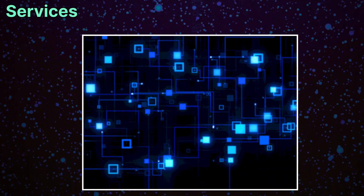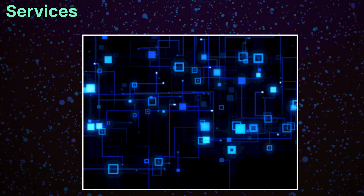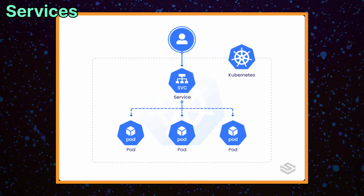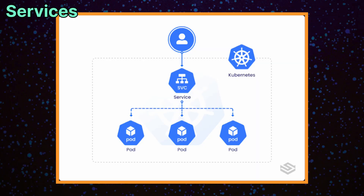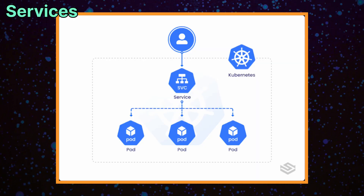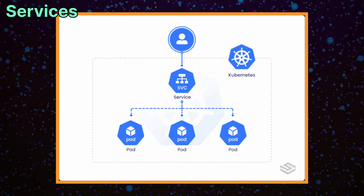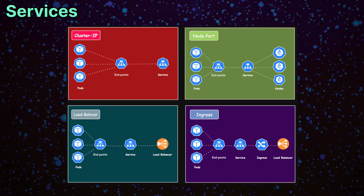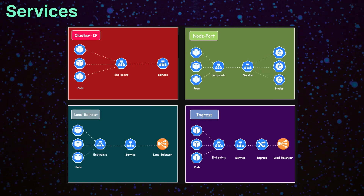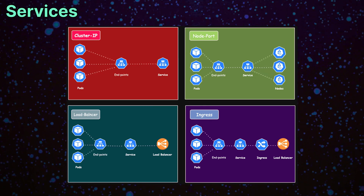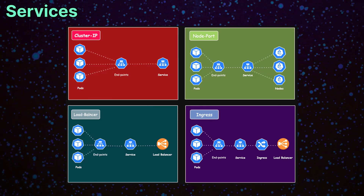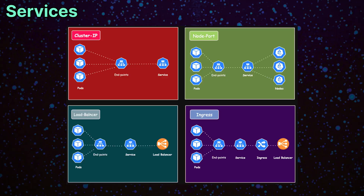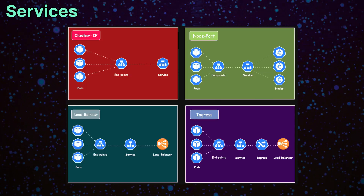Networking is another important piece of the cluster. Services expose pods by giving them a permanent IP and DNS name, so even if pods get replaced, apps can still talk to each other. Services come in different types — for example, cluster IP, which is internal to the cluster, and other types include node port, load balancer, and external name.